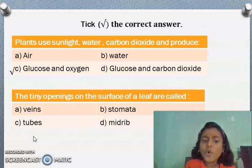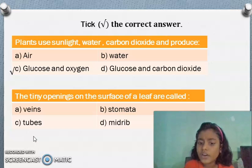The tiny openings on the surface of a leaf are called veins, stomata, tubes, midrib. What is your answer? Yes, stomata. We will put tick mark.